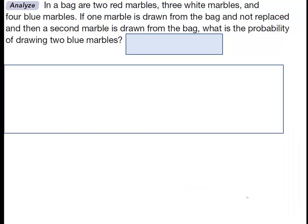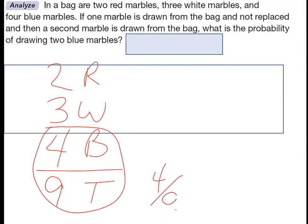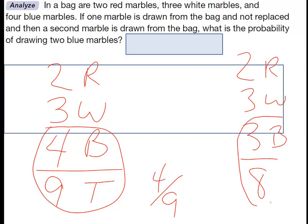Let's do one more. In a bag you have two red marbles, three white marbles, and four blue marbles — nine total. If one marble is drawn from the bag and not replaced, and then a second marble is drawn, what's the probability of drawing two blue marbles? The first time we draw, our probability is going to be four out of nine. The second time we draw, we still have two red and three white marbles, but now only three blue ones, and our total is only eight marbles. So the probability of getting a blue one the second time is three out of eight.